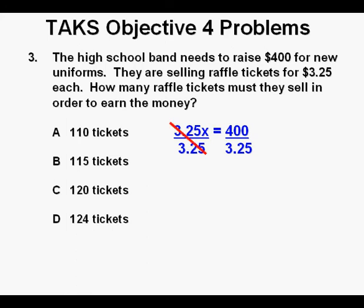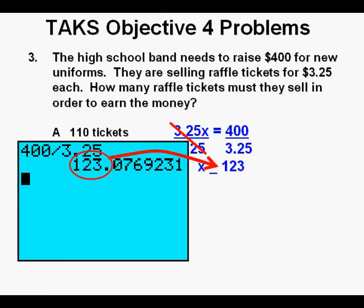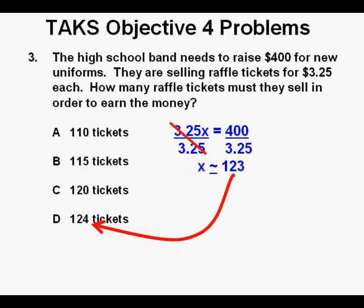3.25 over 3.25 cancel on the left side of the equation. And dividing 400 by 3.25, x equals a little over 123 tickets. And as in most real world situations, there is not an exact answer, but our best answer is 124, and that is D.